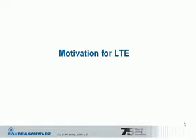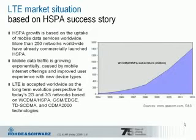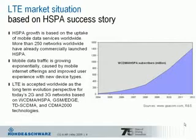So let's start with the motivation for LTE and why LTE is being introduced into UMTS. First of all, LTE is based on the success of High-Speed Packet Access, HSPA, worldwide. As you can see in the chart, the subscriber numbers for HSPA have been steadily increasing over the years. HSPA growth is based on the uptake of mobile data services worldwide, and today more than 250 networks worldwide have already commercially launched HSPA.